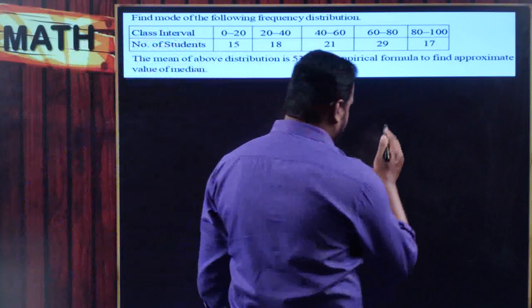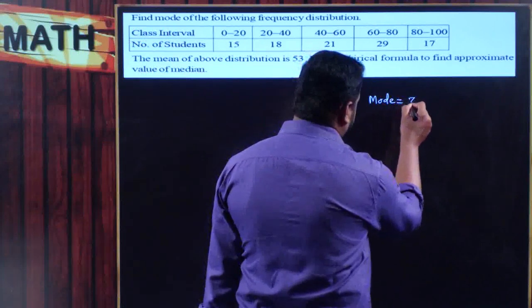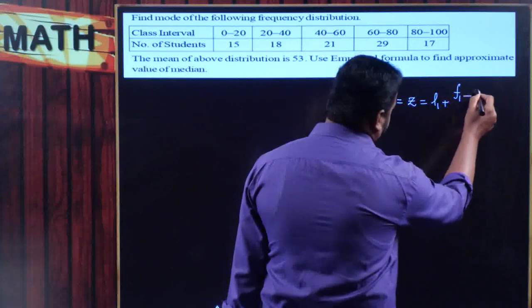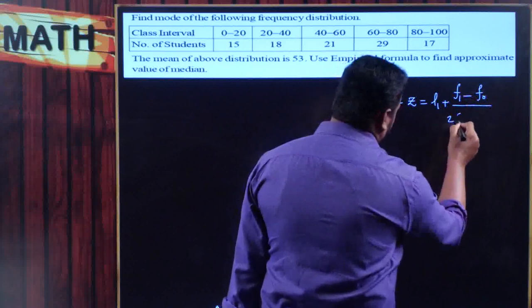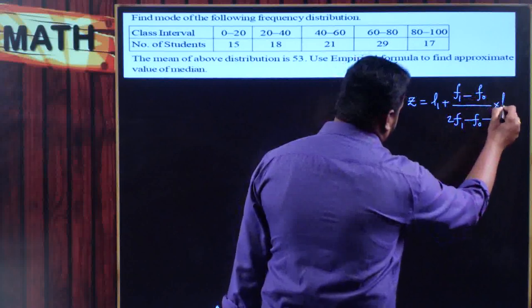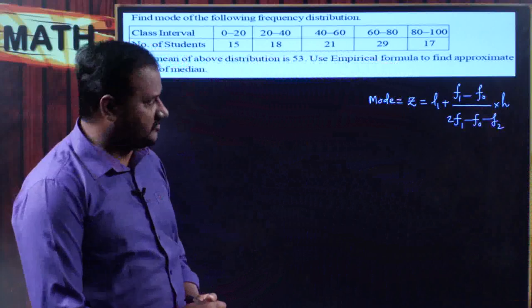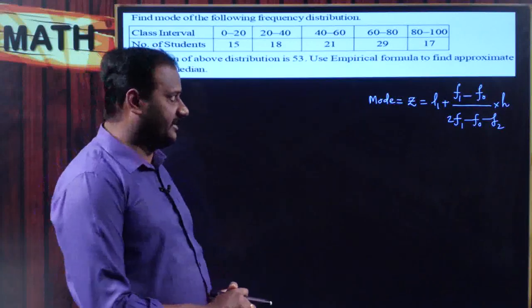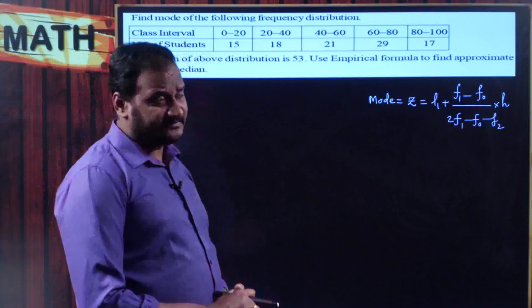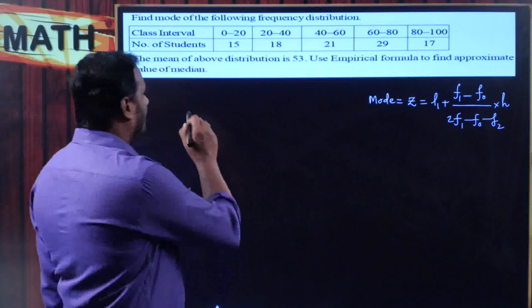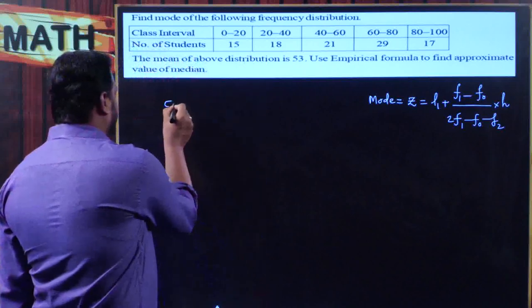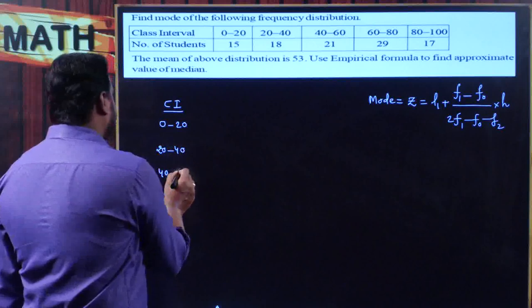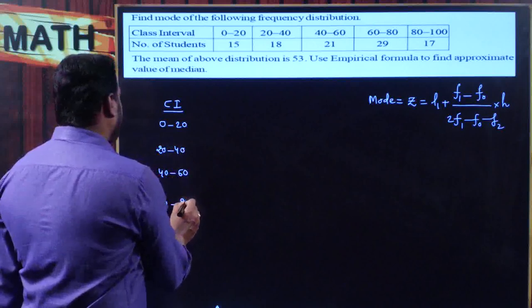To find mode of a frequency distribution, the formula is: Z = L₁ + [(f1 − f0) / (2f1 − f0 − f2)] × h. The frequency distribution has class intervals 0–20, 20–40, 40–60, 60–80, 80–100.